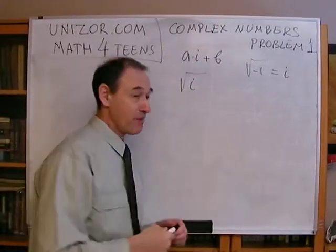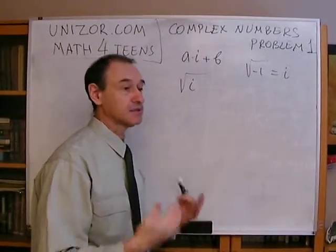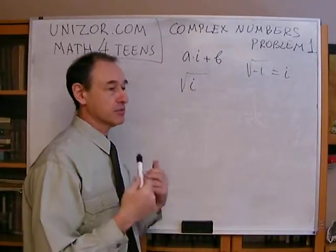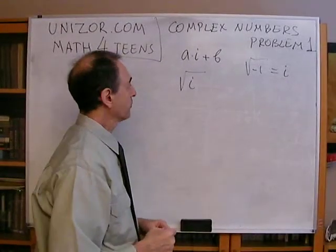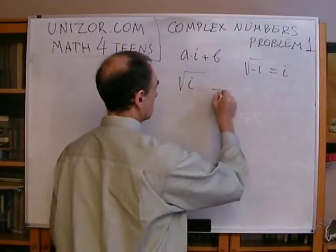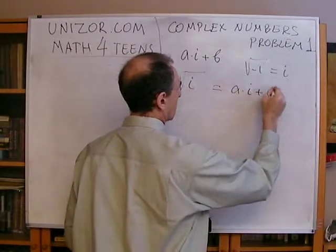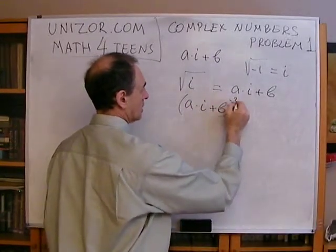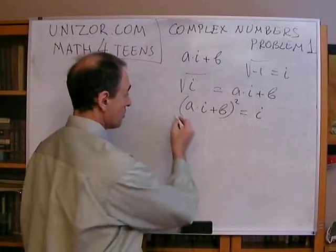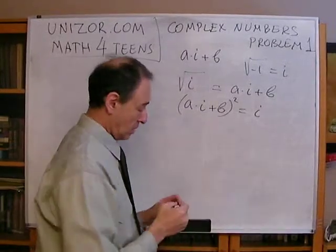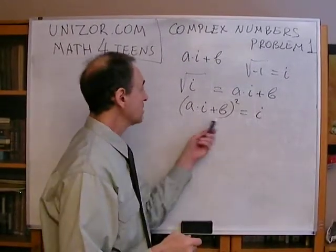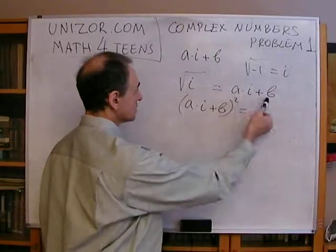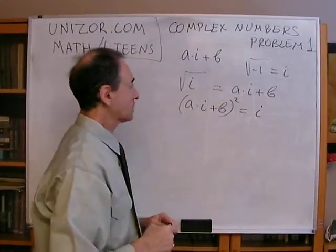Everything is possible, so this is also supposed to be some complex number with its own imaginary and real parts. We have to find the coefficients a and b. So this is supposed to be something of the form ai plus b, and the only property we want is that this being squared is equal to i. Basically, this is an equation — find a and b which satisfy it, and you will know how to extract the square root of i.